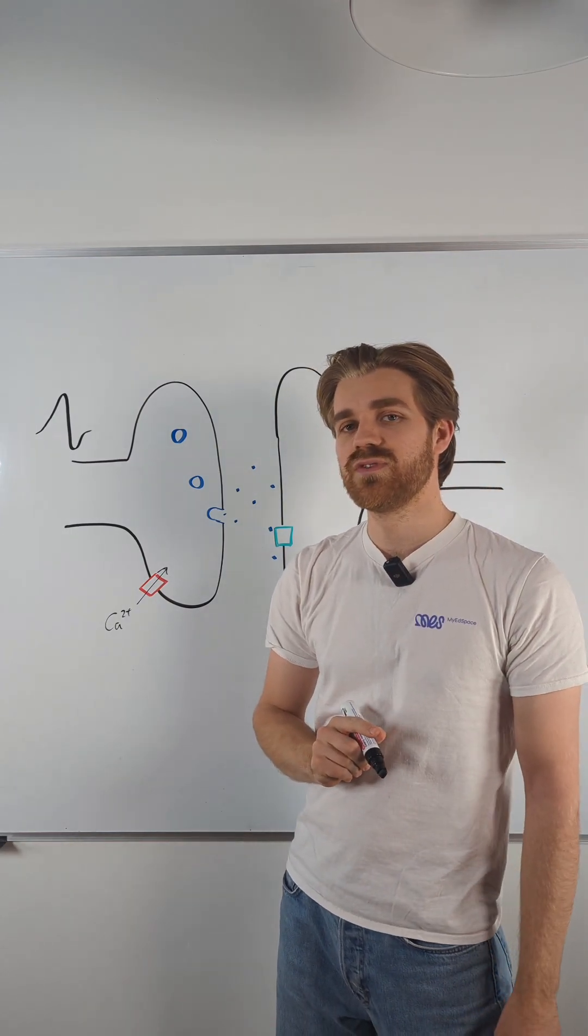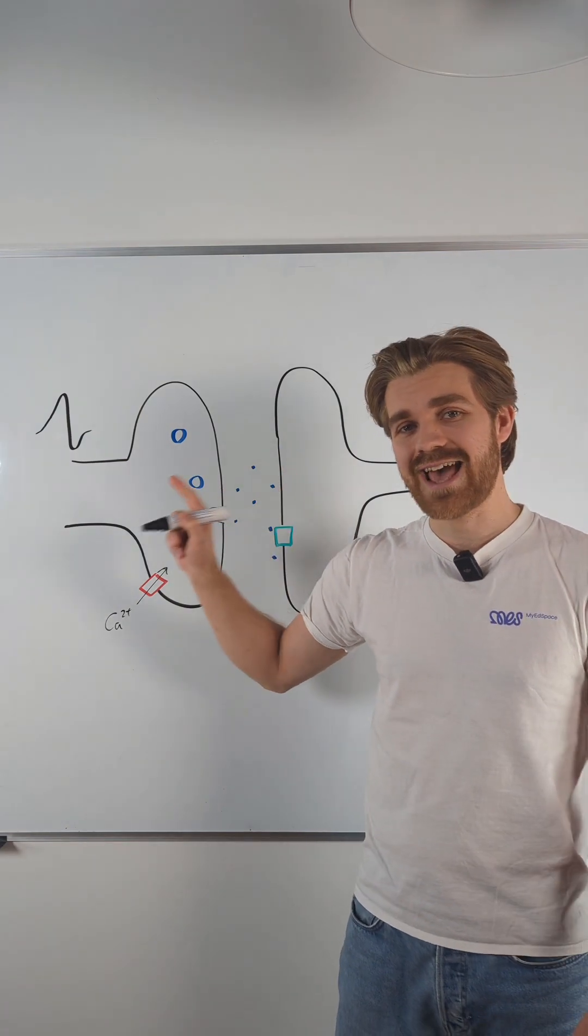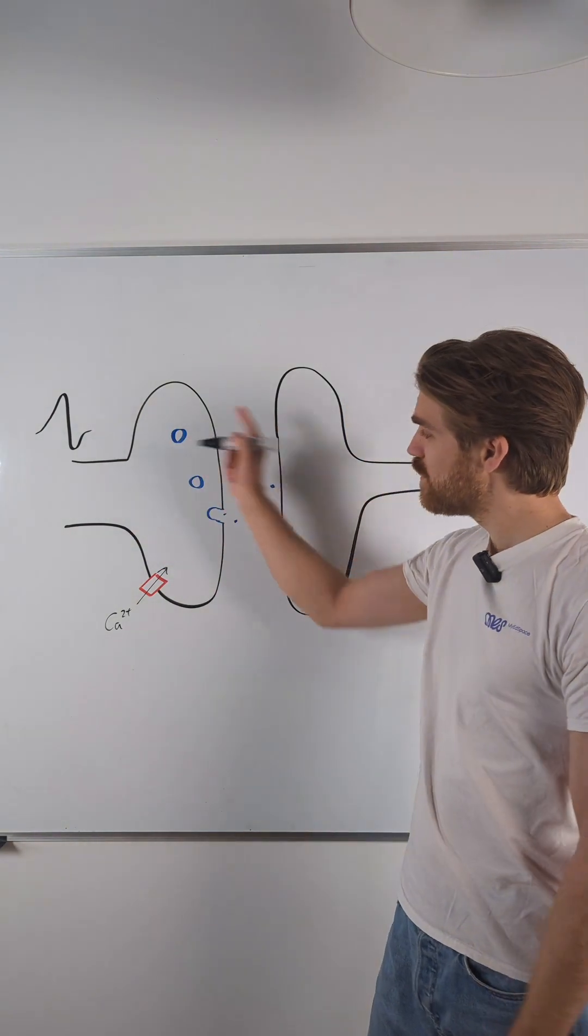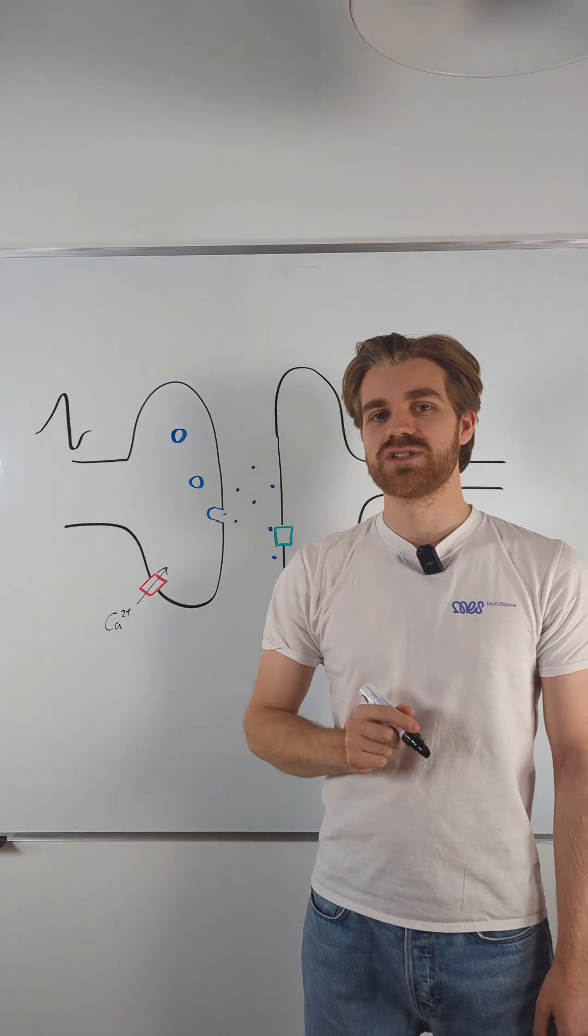When those calcium ions move into the cell, that triggers the vesicles that contain the acetylcholine to move and fuse with the membrane. This is our process of exocytosis.